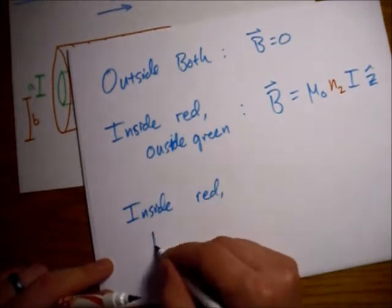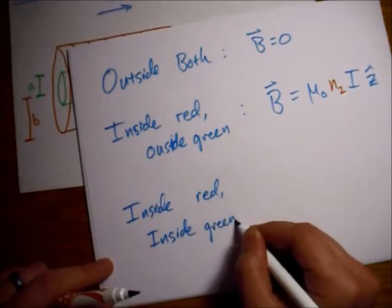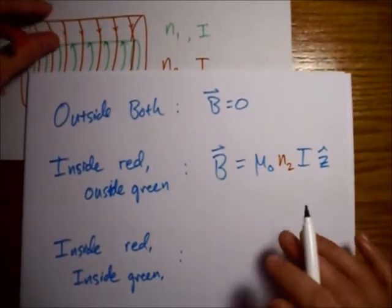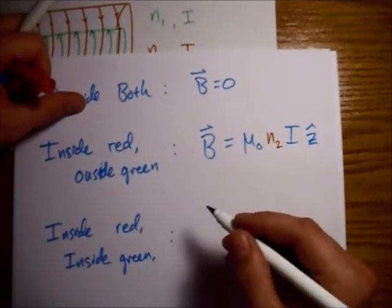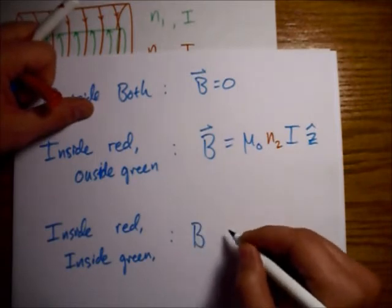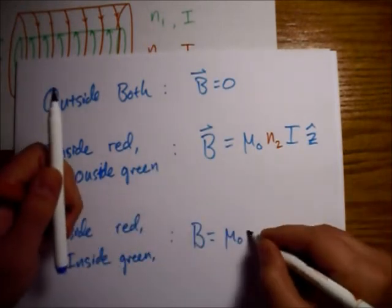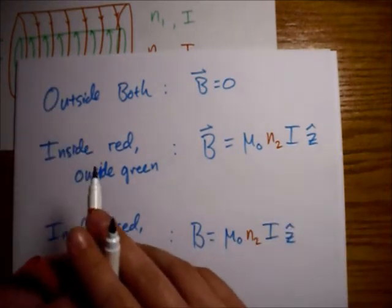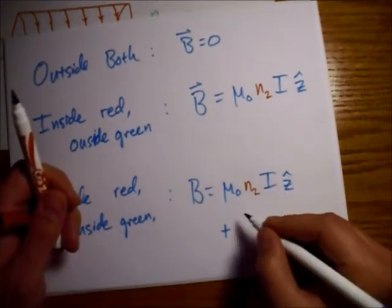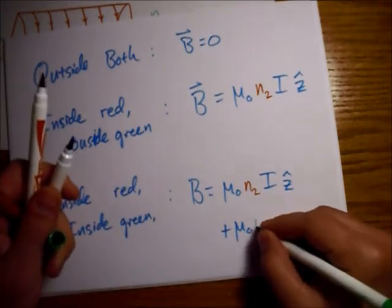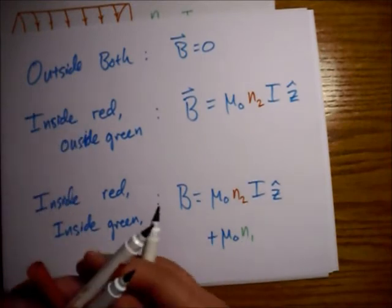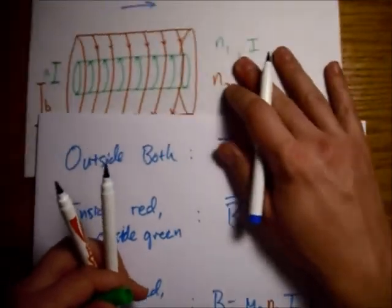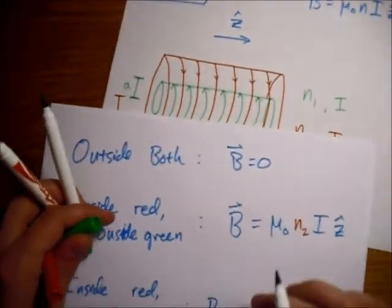So inside red, inside green, we still have the same contribution from the red one, because inside the solenoid the field from that solenoid is uniform. So I'm just going to write out the exact same equation for that part. But then we have another component for the green one. This time, of course, the turns per unit length is different, and so that is reflected in this formula. And also because the current is going in the other direction, the field is pointed the other way. So minus z-hat.